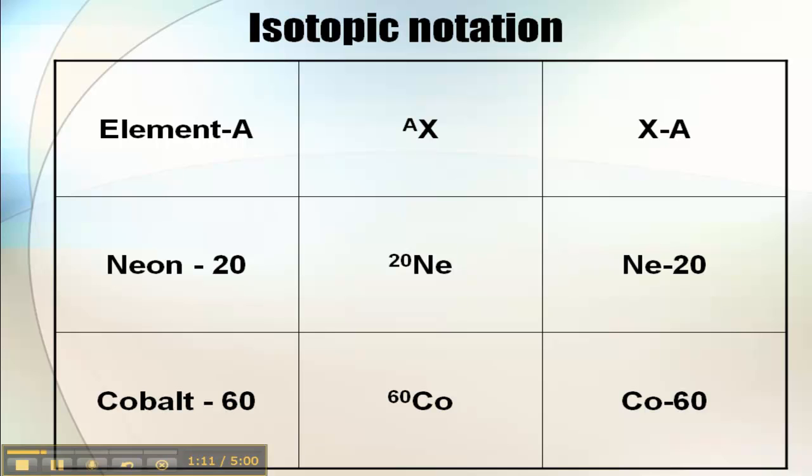So let's look at some ways that we can write isotopic notation. So the first way, you write the element, followed by A. Remember A is mass number, so neon-20, cobalt-60.